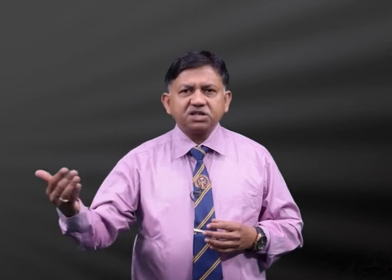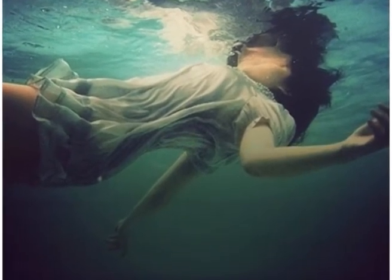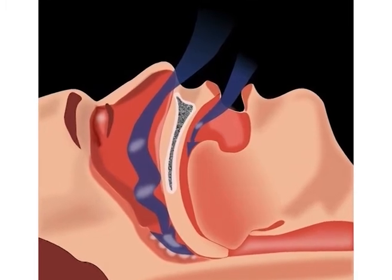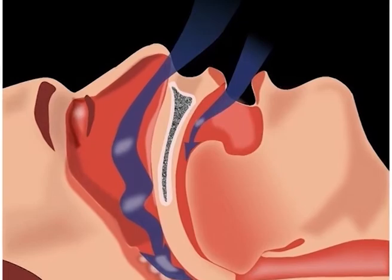Sea water is a hypertonic medium and causes hemoconcentration of the blood. Due to hemoconcentration, as much as 40% of the water from circulation is withdrawn into the lungs, producing massive pulmonary edema. There is increased serum sodium concentration. Pulmonary edema and myocardial anoxia cause death, and in sea water drowning, death occurs within 4 to 5 minutes.